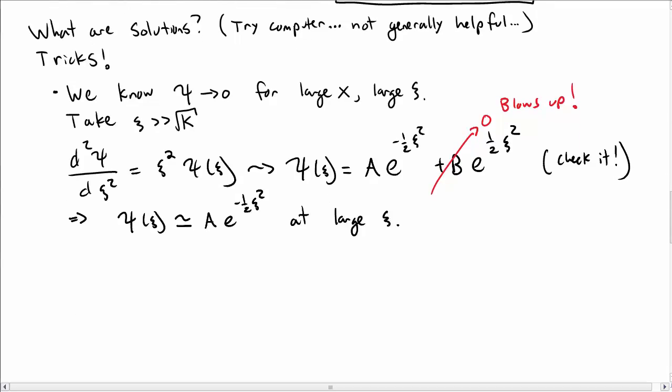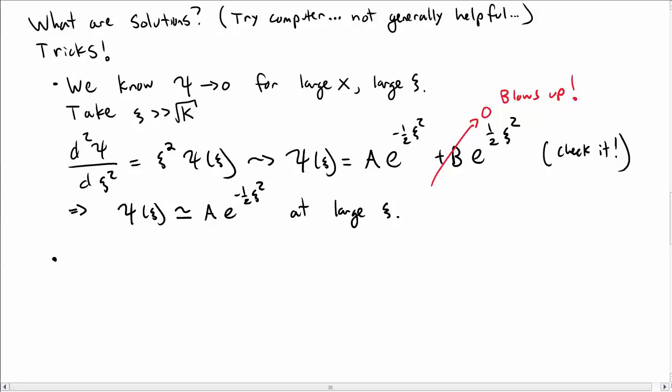Okay, how does that help us? Well, here's the next trick. We're going to make a guess for the wave function. We're going to say the wave function is some other function times e^(-½ξ²), and we're then going to try and figure out what that other function H(ξ) is.